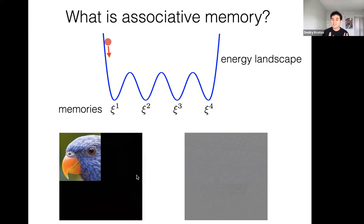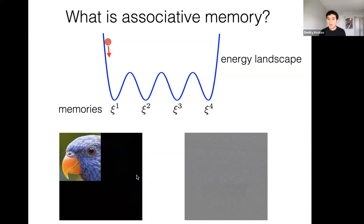In the context of masked autoencoding, this is not just a high-level analogy — it is actually a precise mathematical statement that can be made about transformers and their relationships to Hopfield networks. In the context of diffusion models it's a bit more open-ended, an open research question as to what extent there are parallels, but I think it's also a very exciting topic to think about.